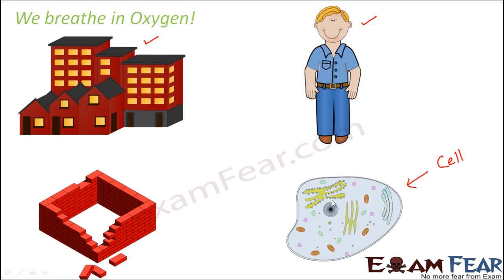This is how one cell looks like. Millions and millions of cells like this together form an entire organism. Now, these cells are very, very small in size and can never be seen with the naked eye. In fact, in order to see the cells, you really need a very powerful microscope.